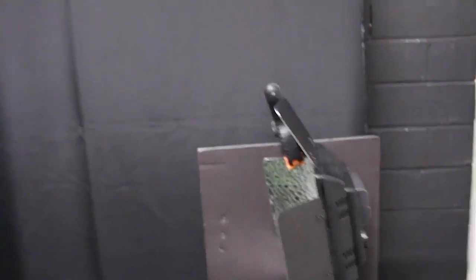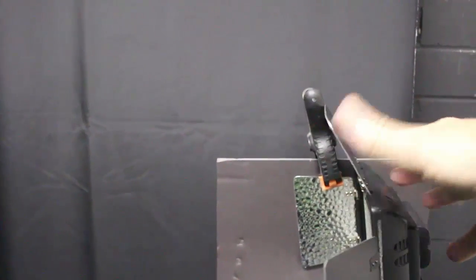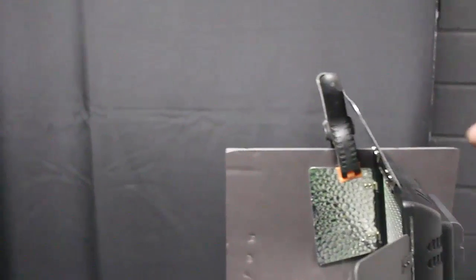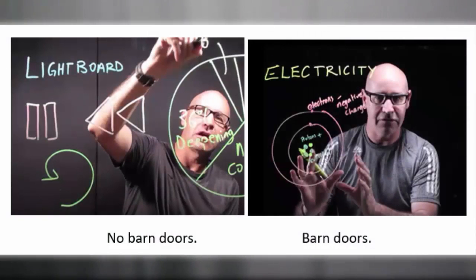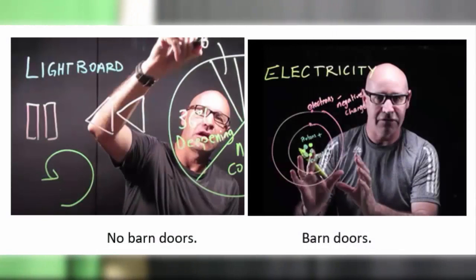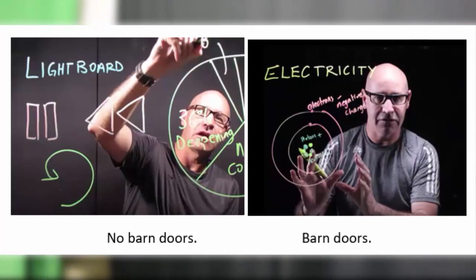As you can see here, these have got barn doors on them, but I've just added a little bit more of an extension on the barn door. The idea there is to ensure that there's no light on our backdrop, so it looks absolutely black, and you can see the talent or the person doing the speaking really bright up against an absolutely matte black backdrop.